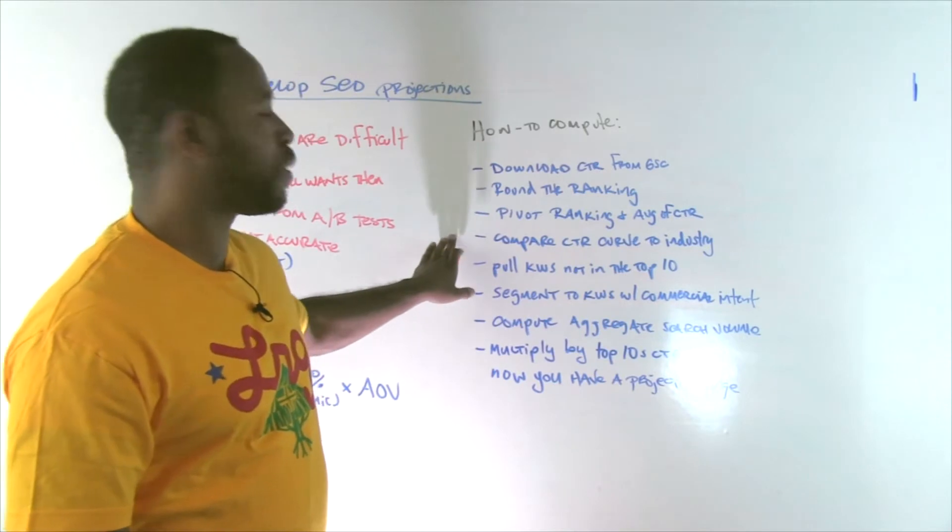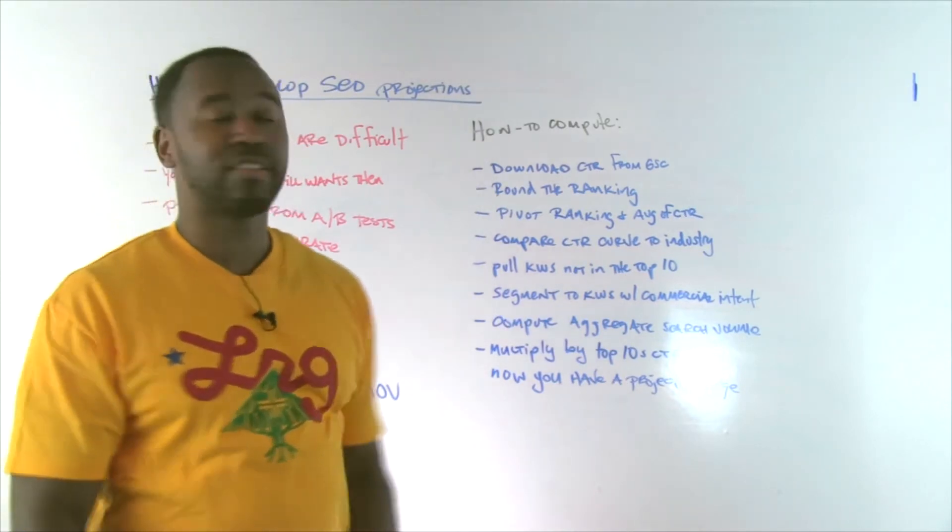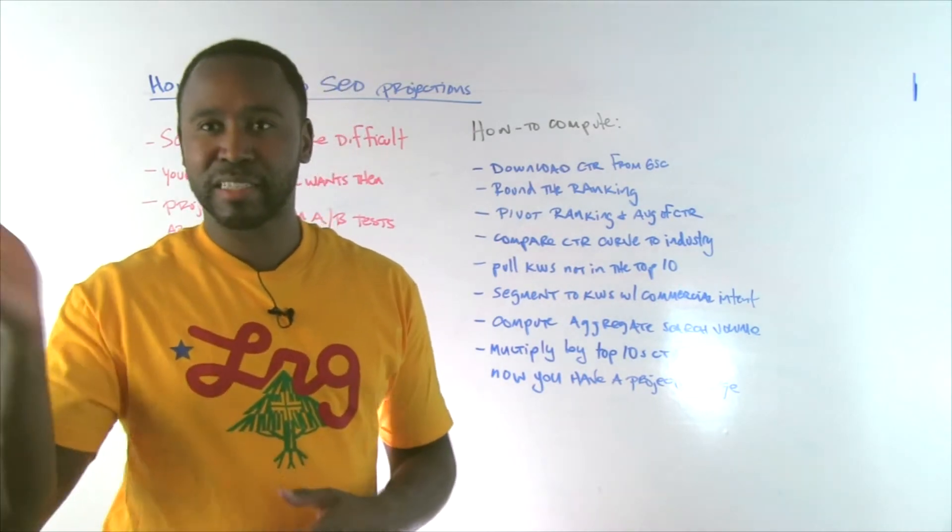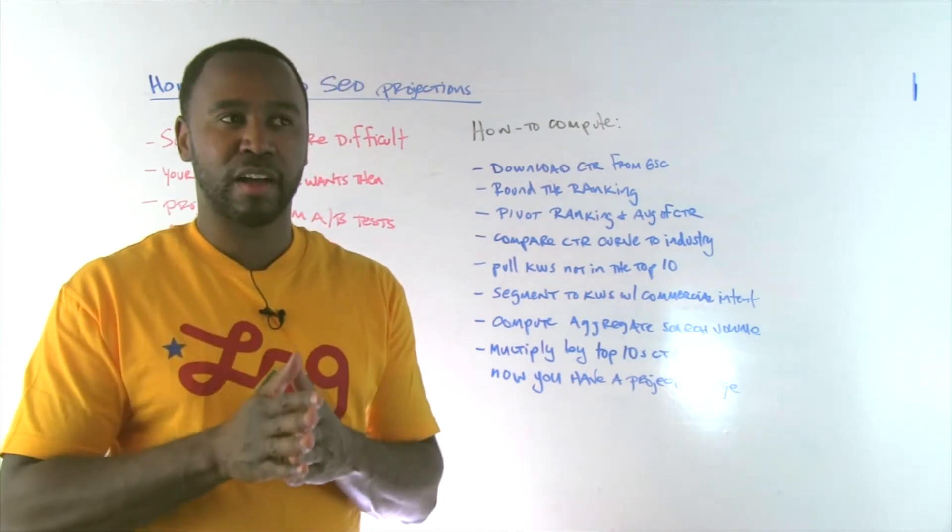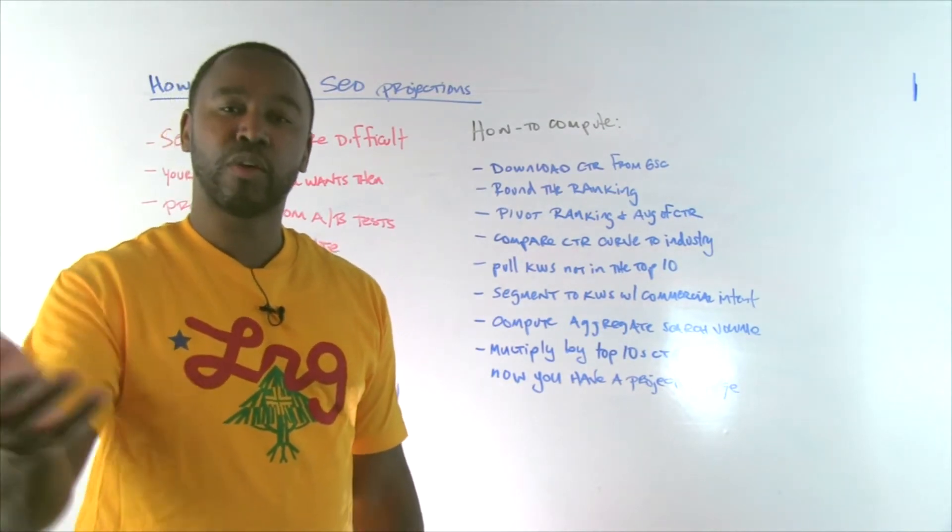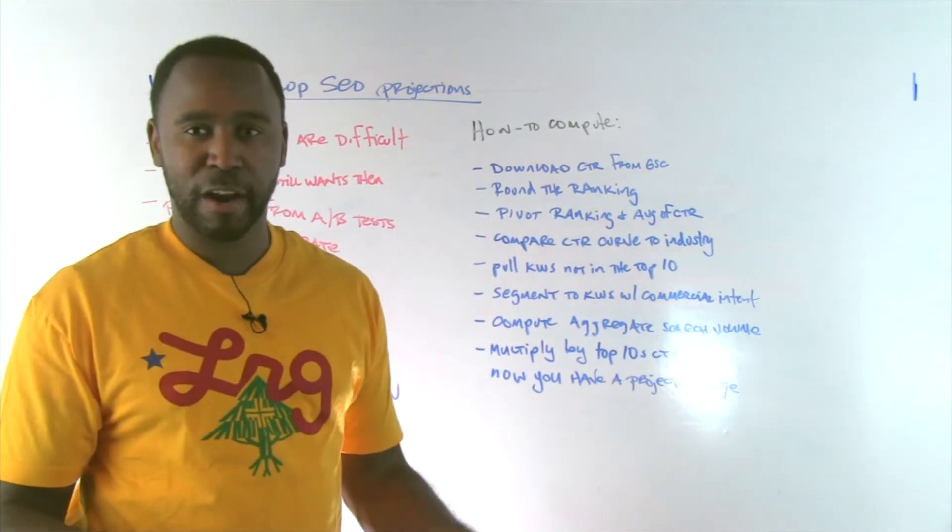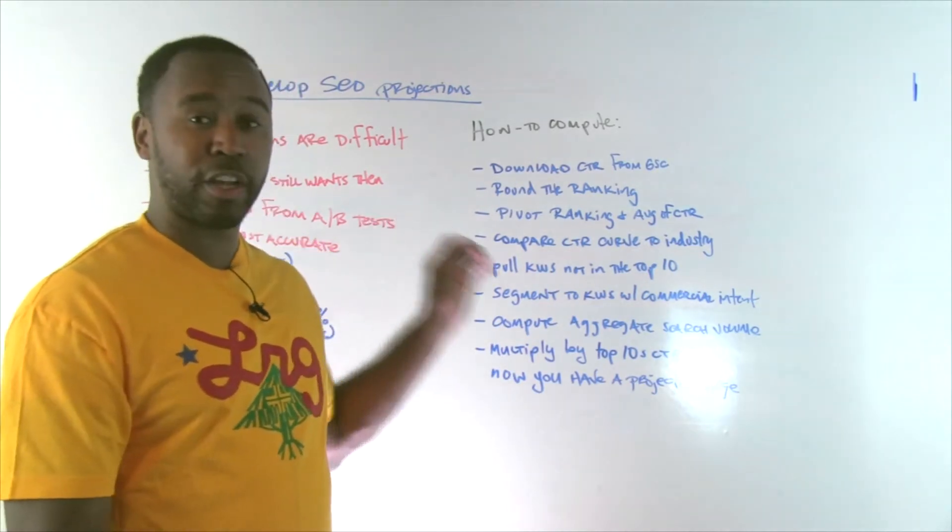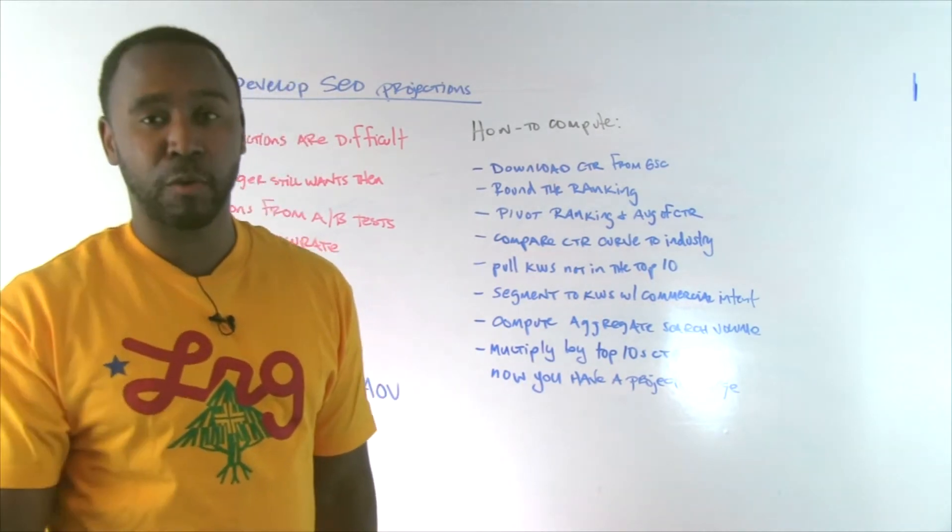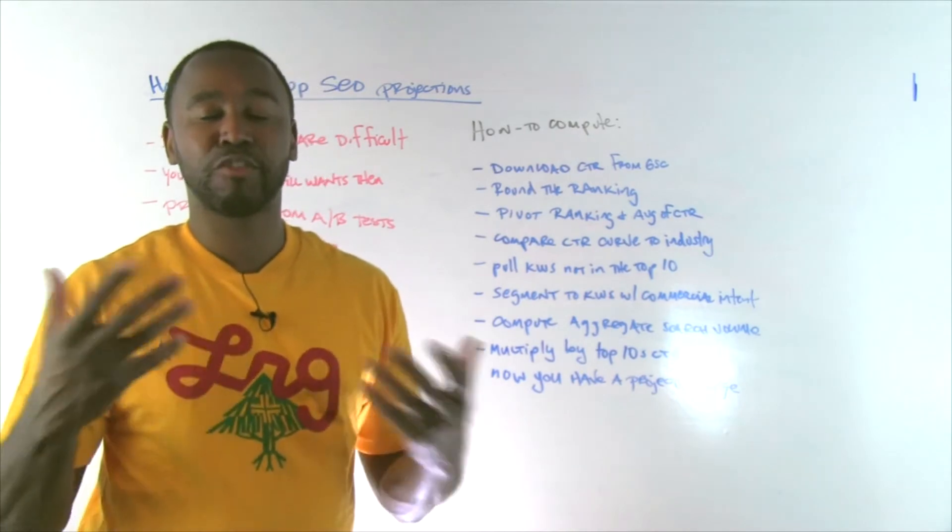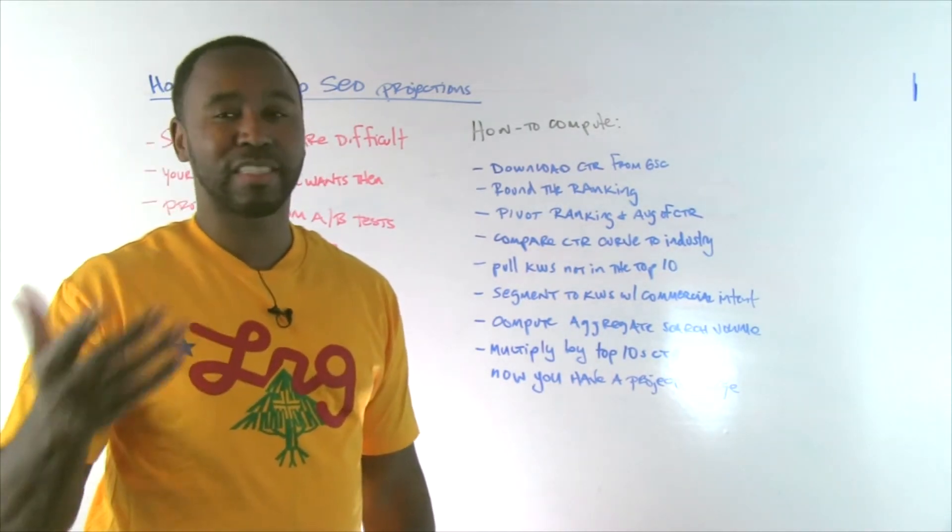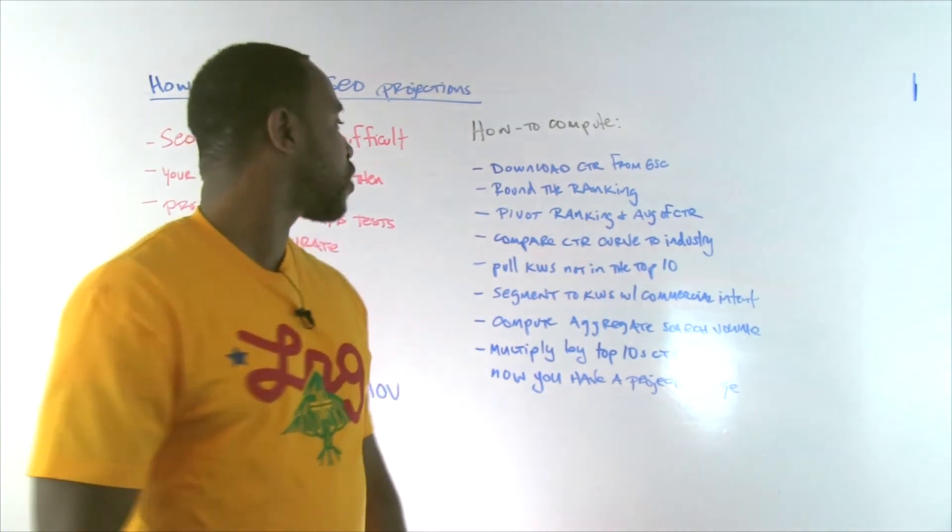So another thing that you want to do is then compare to the CTR curve for your industry. So advancedwebranking.com slash CTR study, they show you what the click-through rate curves are looking like across a variety of different industries. You can pull that for the last month or whichever month that you care about and then compare that to what you're seeing. So you can get a sense of, okay, how are other people performing? Are we doing better with our website? Are we doing worse? And that then gives you an opportunity to determine, is there more opportunity for us to improve by adjusting our metadata and so on?